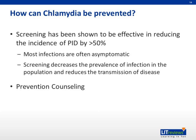Chlamydia infection can be prevented by screening and prevention counseling. Screening has been shown to be effective in reducing the incidence of pelvic inflammatory disease among women by more than 50%, as most of these infections are asymptomatic. Screening also decreases the prevalence of infection in the general population, thereby reducing transmission of the disease.